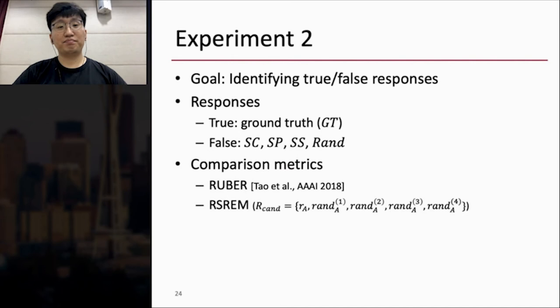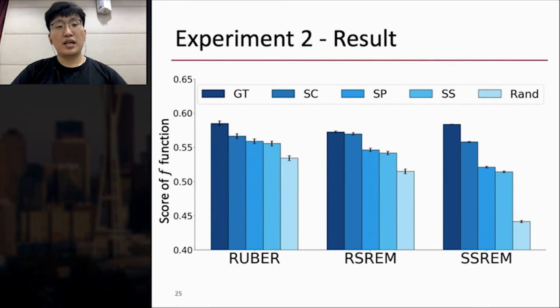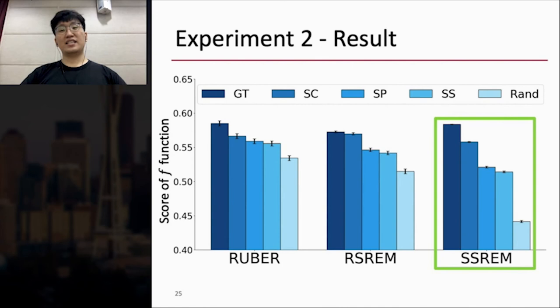The goal of the second experiment is identifying true and false responses. So ground-truth response is true response, and the SC, SP, SS, and Random are the false responses for a context. And I pick out RUBER and RSREM as baselines, since they look at the correlation between context and the generated response. So here is the result. X-axis is each metric, and Y-axis is the score of the function. The error bar is 95% confidence interval of the value. All models perform well on distinguishing between ground-truth and Random utterances. But RUBER performs poorly on identifying SC, SP, and SS. SSREM outperforms the other two models for identifying all cases statistically significantly.